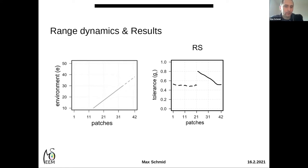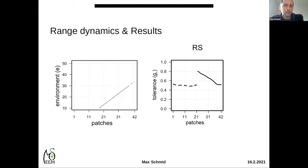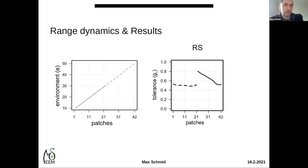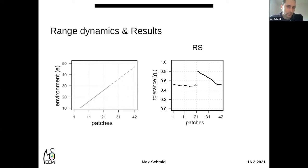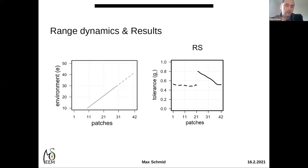To understand why: patch 22 was the first colonized during the range shift and had the longest history of ongoing environmental change, so the population there solved this problem by evolving higher tolerance. Patch 31 or 32 was colonized much later and had a shorter history of change, so tolerance still increased but to a lower extent. At the leading edge, genotypes were always able to follow their optimal conditions through space and did not experience environmental change over time — that is why they maintained their initial tolerance levels.